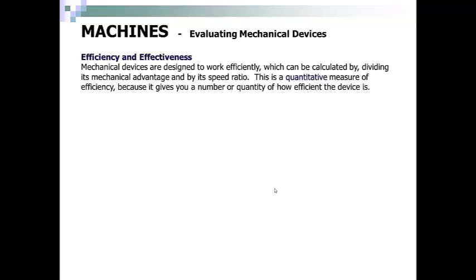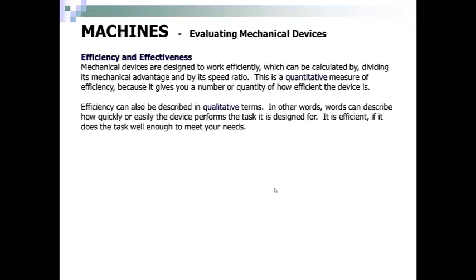Mechanical devices are designed to work efficiently, which can be calculated by dividing its mechanical advantage by its speed ratio. This is a quantitative, or numbers-based, measure of efficiency because it gives you a number or quantity of how efficient the device is. Efficiency can also be described in qualitative terms — in other words, words can describe how quickly or easily the device performs the task it was designed for.